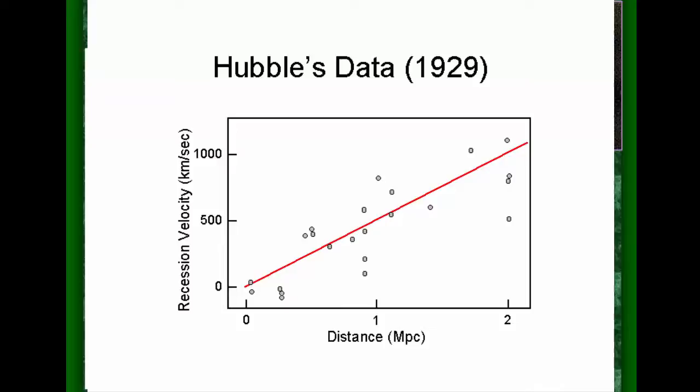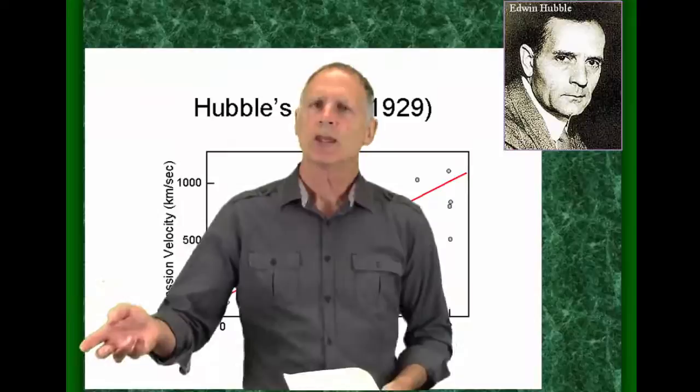Hubble discovered, and I don't mind repeating it, that the farther away something is, the faster away it's moving from us. All of those have red shifts, they're all moving away from us.